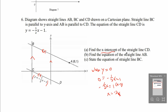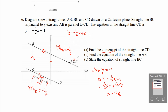Part B: find the equation of straight line AB. AB is parallel to CD, so gradient of AB equals to negative 1/2. For AB: Y equals to negative 1/2 X plus C. Substituting coordinate of A (6, 1): 1 equals to negative 1/2 times 6 plus C, so 1 equals to negative 3 plus C, giving C equals to 4. The equation of AB is Y equals to negative 1/2 X plus 4.